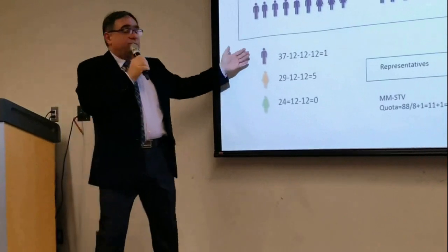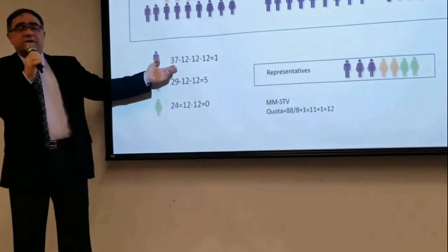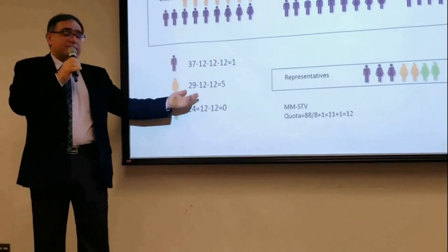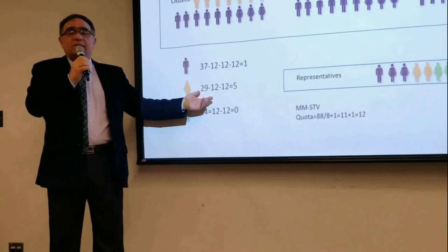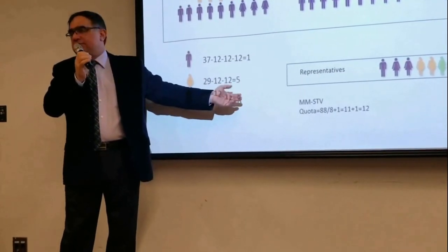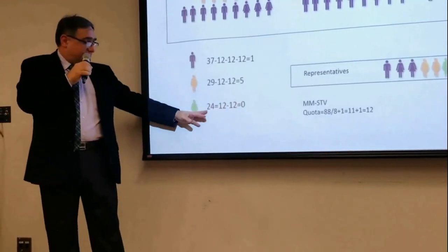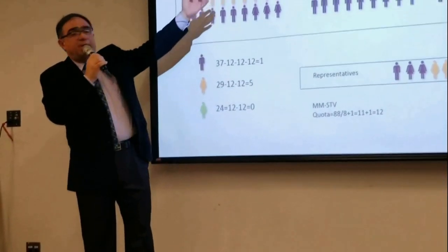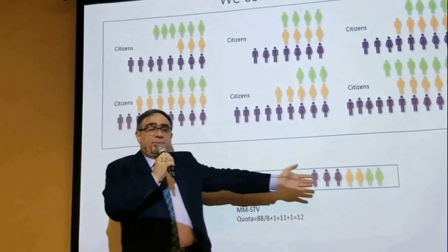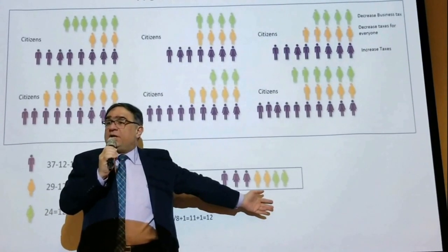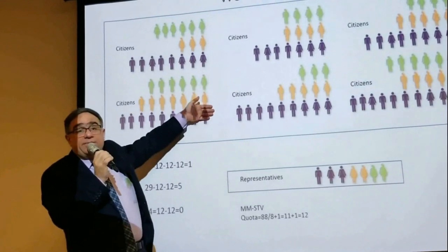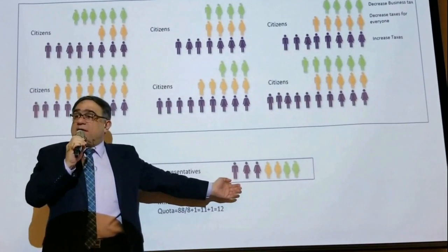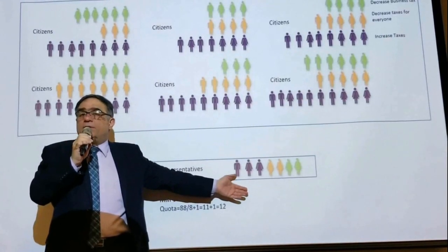The vote split between decreasing taxes for companies or for all people is represented in parliament. The people who want to increase taxes will be heard, but they are a minority — as they are in society. These groups will form a coalition government. Is this coalition government stable? It is very stable, because it would need a huge shift in public opinion to make it unstable. Even if one group convinces the other to change their position slightly, they're still the coalition government.